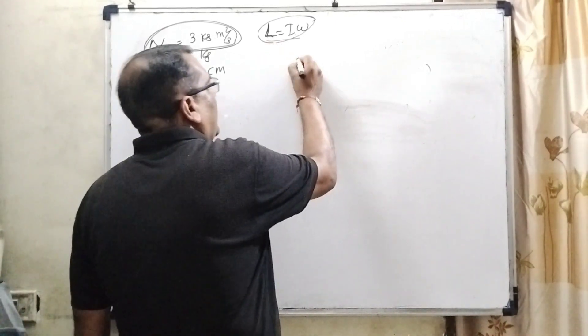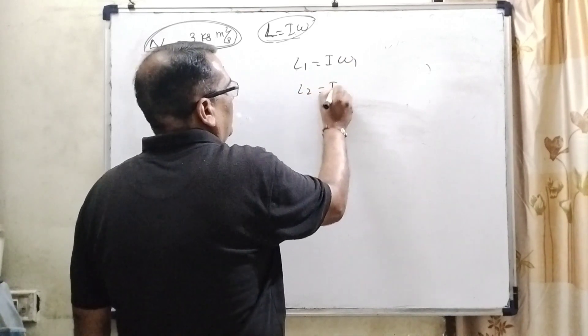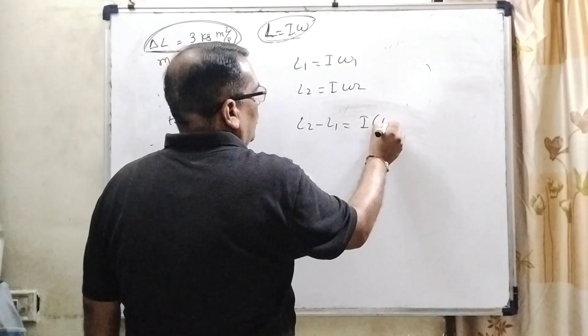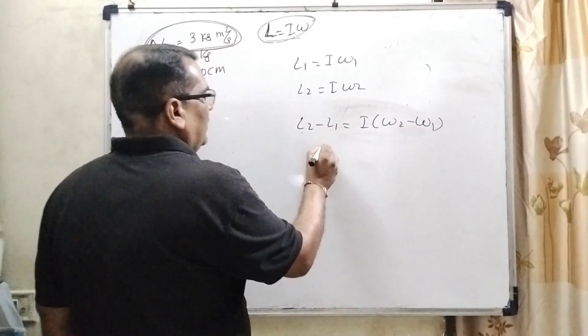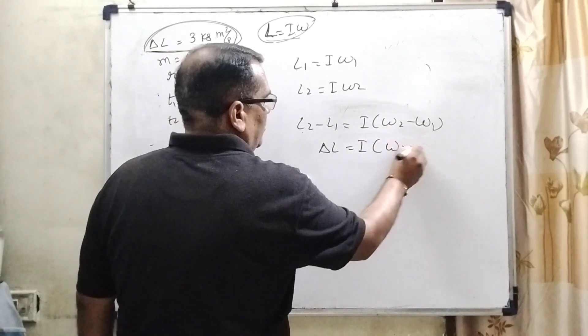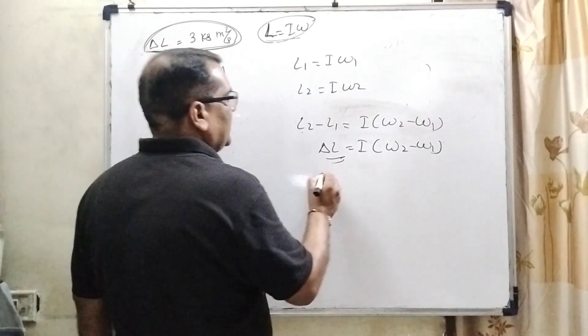So here we have L₁ = Iω₁, L₂ = Iω₂. Now L₂ - L₁ equals, taking I common, I(ω₂ - ω₁). So L₂ - L₁ can be written as ΔI = I(ω₂ - ω₁). What is ΔI? It is given as 3 kilogram meter squared per second. So we substitute this value.